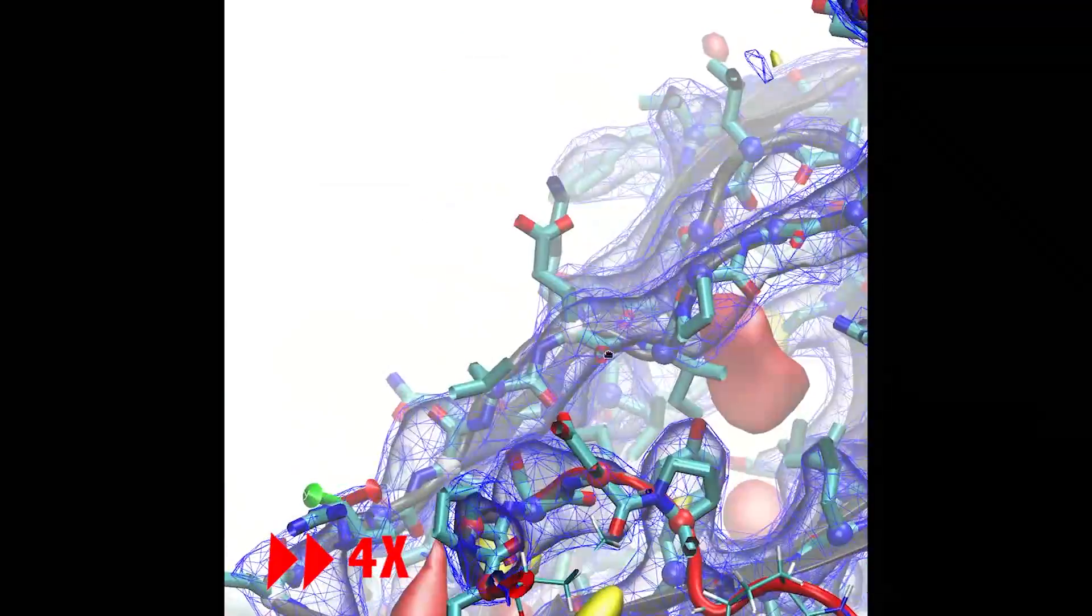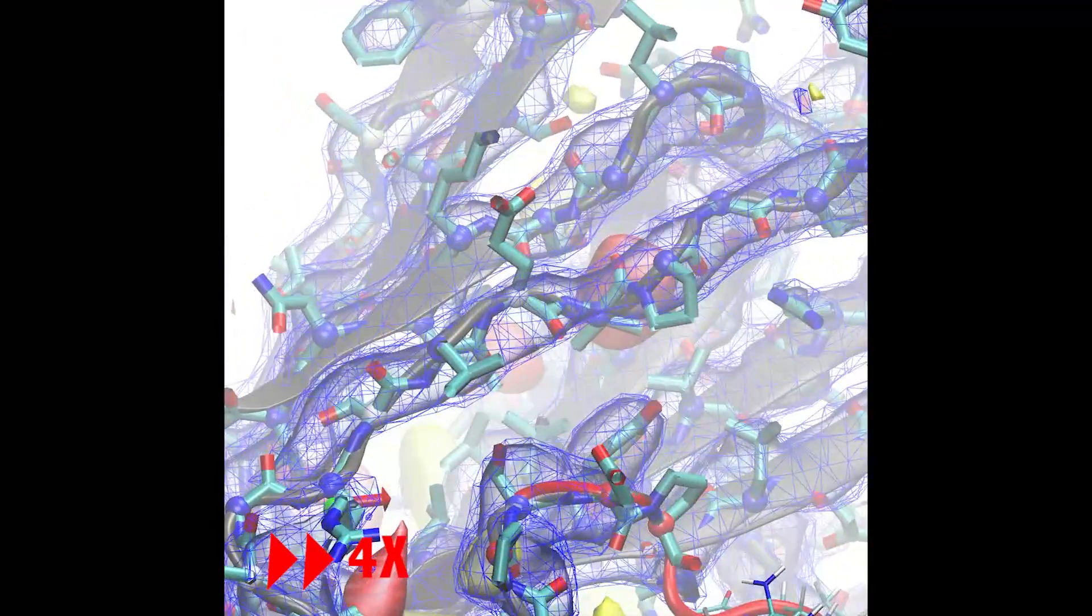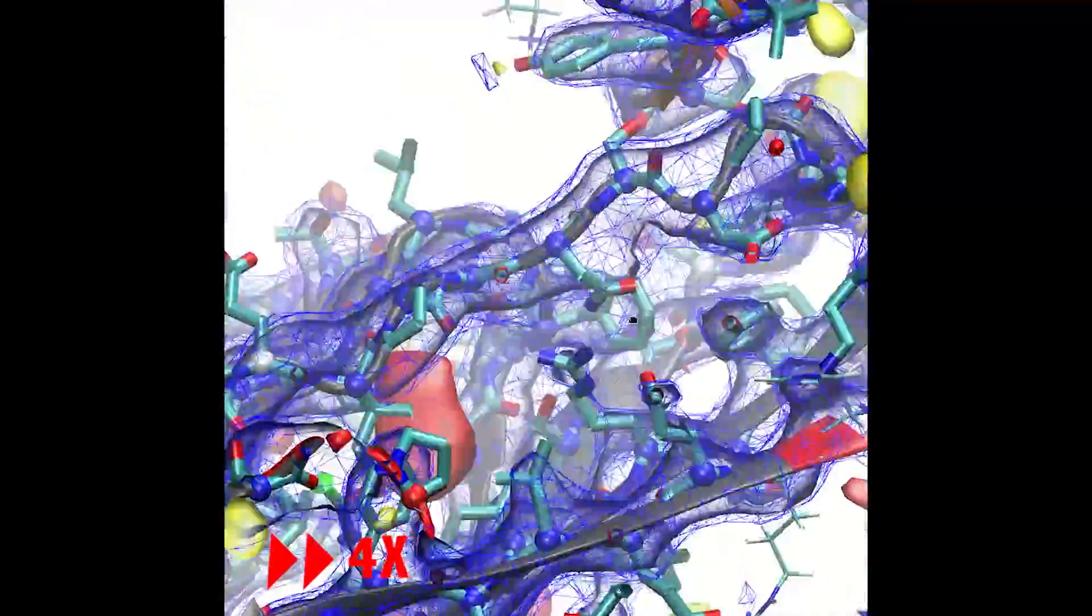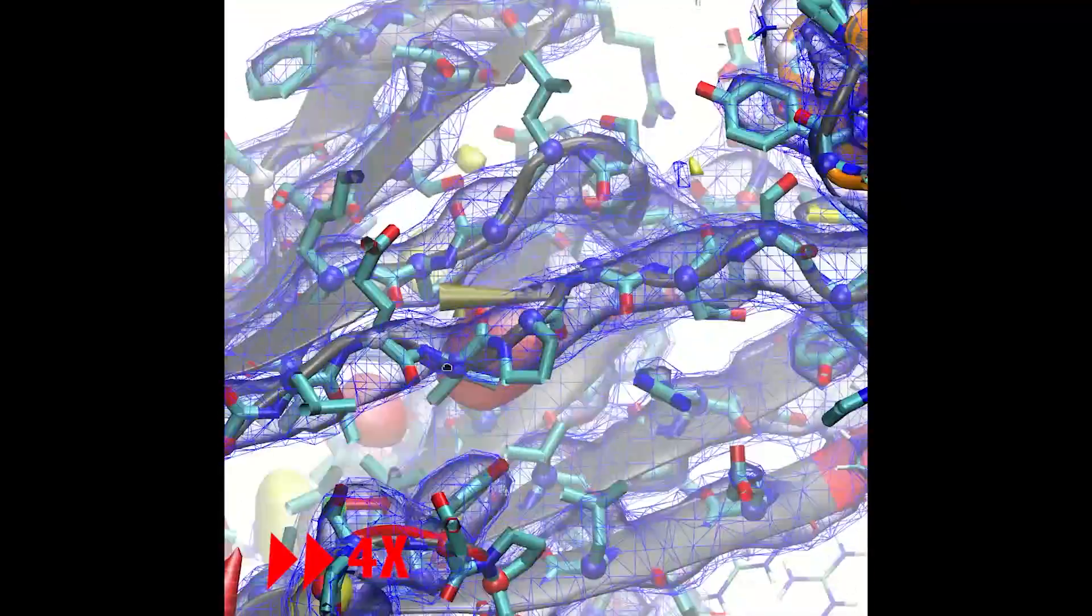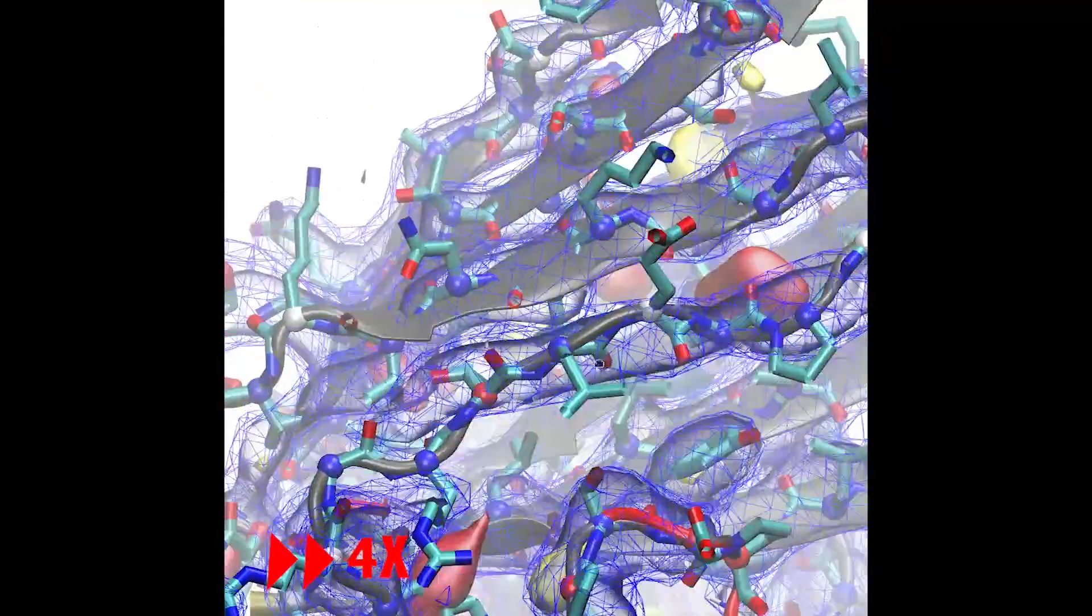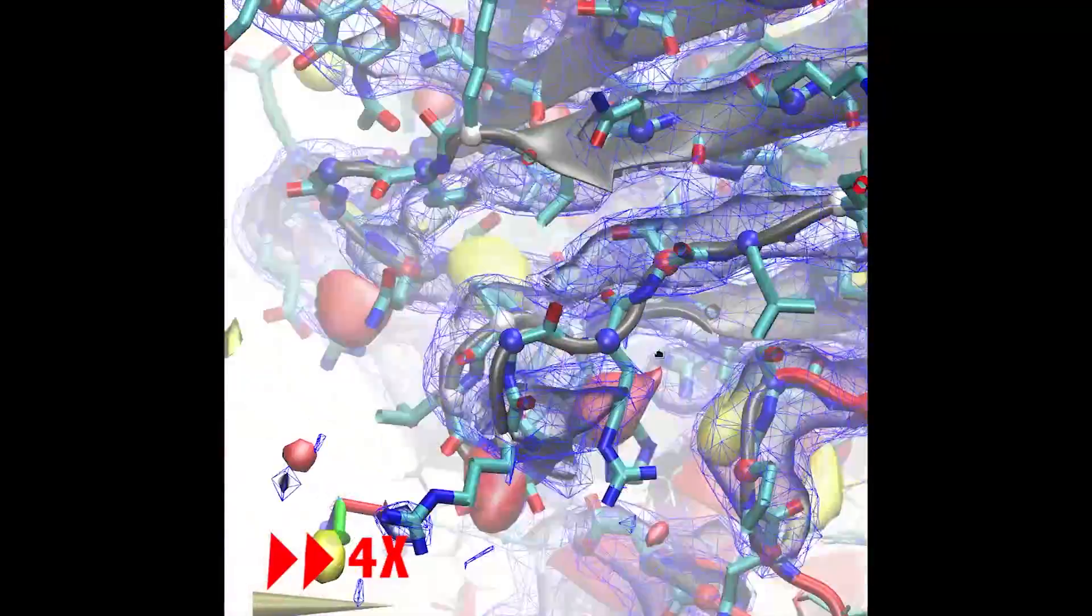The remainder of this video tracks the remodelling of this and the remaining two out-of-register beta strands. While I have accelerated and trimmed the playback, the real-world time for inspection and interactive remodelling of these four strands was a little over 30 minutes.